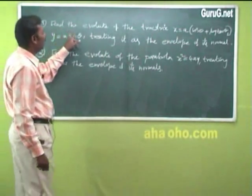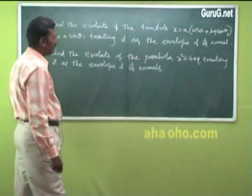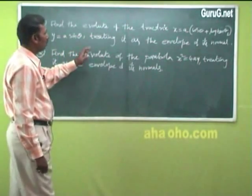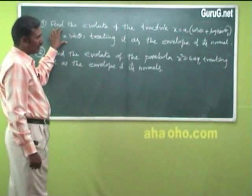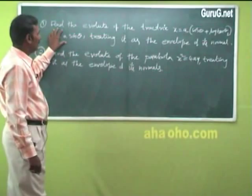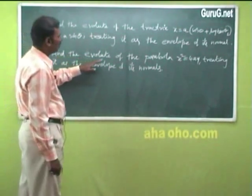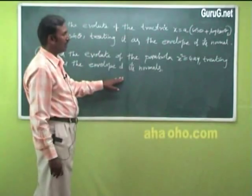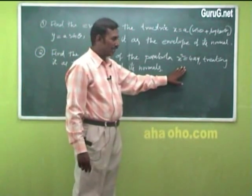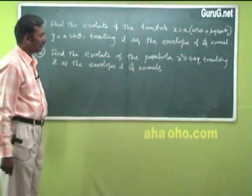Now find the evolute of the tractrix x = a(cosθ + log(tan(θ/2))), y = a·sinθ, treating it as the envelope of its normal. Also find the evolute of the parabola x² = 4y, treating it as the envelope of its normal — write the normal equation with a parameter and then eliminate the parameter.